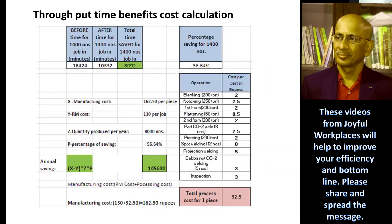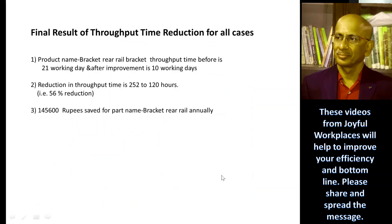The results: before time study, for 1,400 number of jobs, the time was 18,424 minutes. After the time study, it reduced to 10,000 minutes — a total time saving of 8,092 minutes, which is 56.6% saving. The total process cost per part was 32.5 rupees, manufacturing cost 162 rupees 50 paise, RM cost 132 rupees per job — giving an annual saving of ₹45,600 for one particular line.